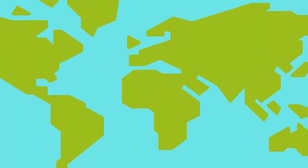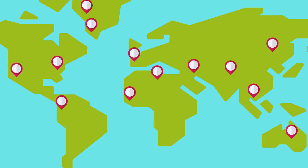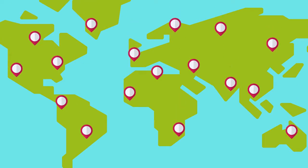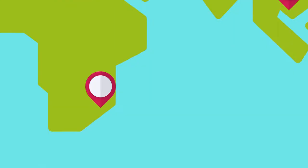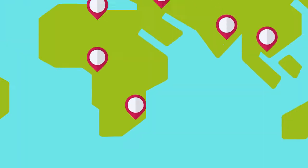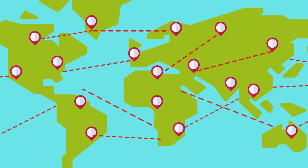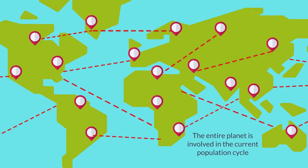Population cycles were also regional and largely confined to environmentally linked regions, as local markets and climate fluctuations led to isolated declines or booms. Today, because of the interdependence of the global economy, the entire planet is involved in the current population cycle.